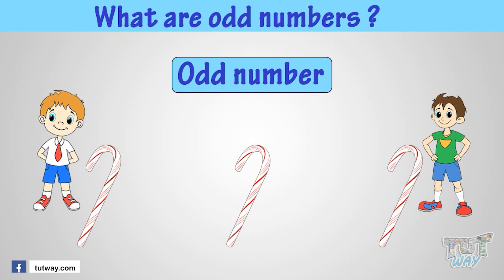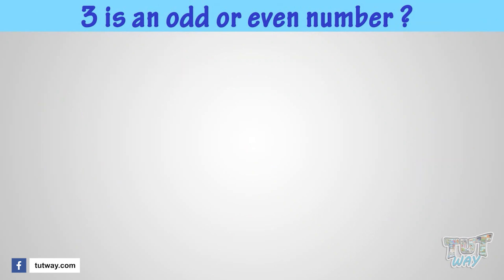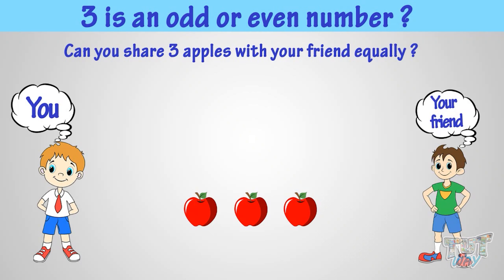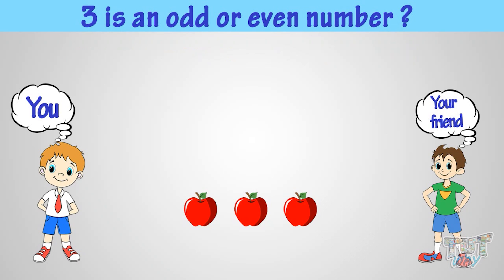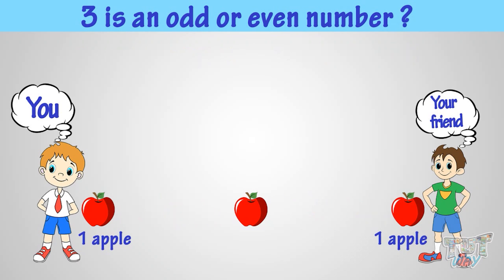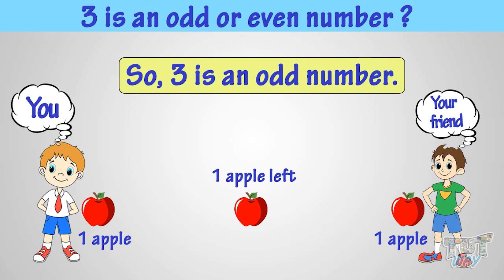Let's see if 3 is an odd or an even number. Can you share 3 apples with your friend equally? You can't, as one apple is left. So, 3 is an odd number, or 3 apples are an odd number of apples.